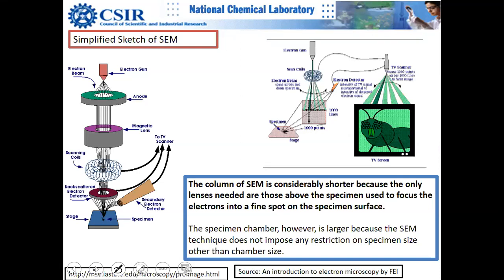Looking at a simplified sketch of SEM: as the name suggests, the electron gun remains the same. You have either thermionic emission, where you heat the filament to generate the electron beam, or field emission where you apply a voltage to generate electrons. Field-emitted electrons are much better, which is why FE-SEMs are much better than thermionic emission SEMs — and the same is true for TEM. You have an anode where you apply whatever voltage you wish, for example 10 kilovolts, and you don't need such a high voltage as in TEM.